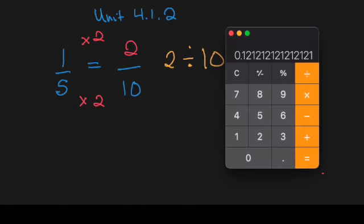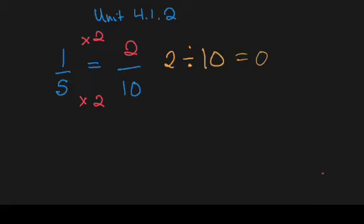And if we pop in our calculator again, 2 divided by 10 equals 0.2, which is a terminating decimal.